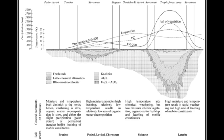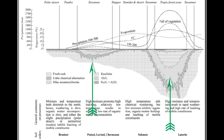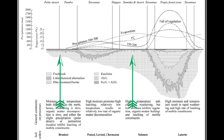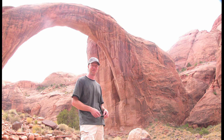Climate gives the general pattern that wetter climates give thicker, more well-developed soil profiles, with the warmer wet climates getting the thickest and most well-developed soil. Dry climates have the thinnest soil profiles and often have bare, unaltered rock exposed at the surface.